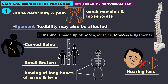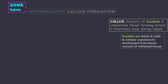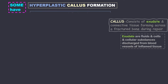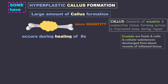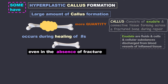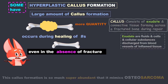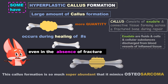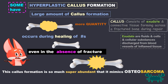Hearing loss can occur due to thickening of the spongy bone. Some patients have hyperplastic callus formation — that is, a large amount of callus formation — which occurs during healing of fractures but can also occur in the absence of a fracture. This callus formation can be so superabundant that it mimics osteosarcoma.